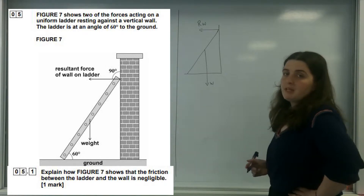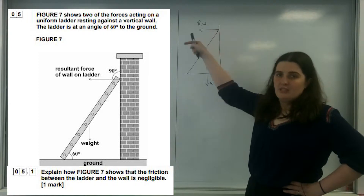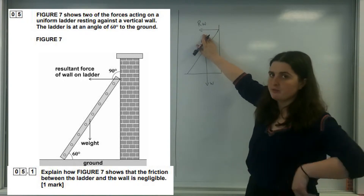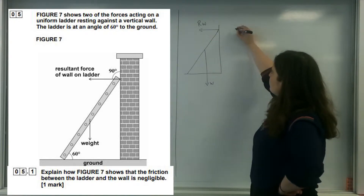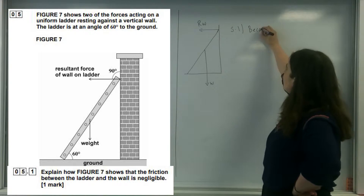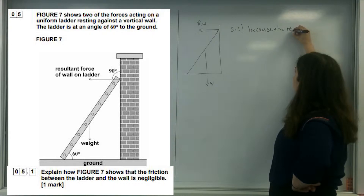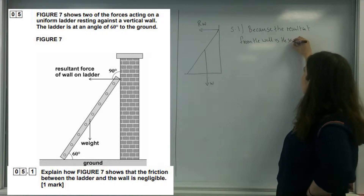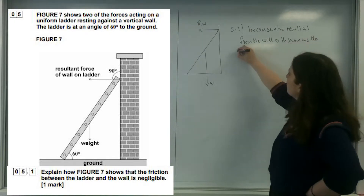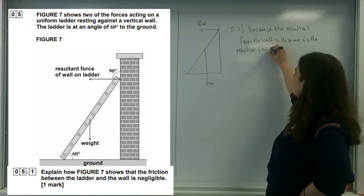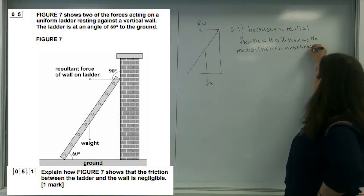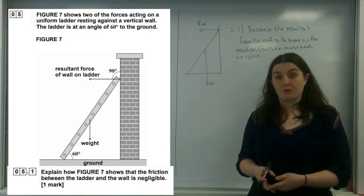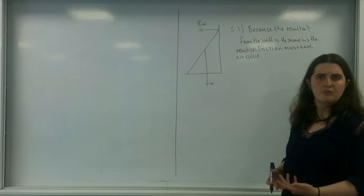The reason I know it's negligible is because I have a force acting at 90 degrees. Friction would be working up or down and would cause the resultant force — it's not the reaction force, it's the resultant force — to be at a slight angle. So the answer for question 5.1 is that because the resultant force from the wall is the same as the reaction, friction must have no effect. Because it's literally going in the same direction as that reaction force from the wall, there must be no friction — the resultant is the reaction force.